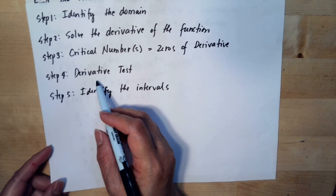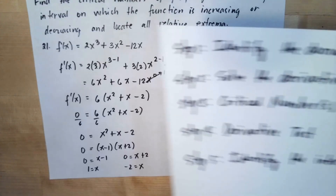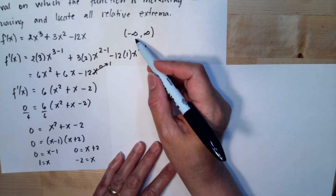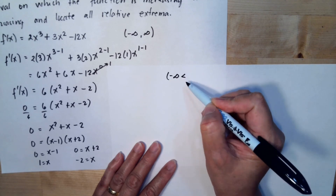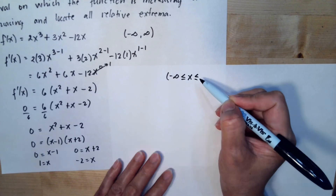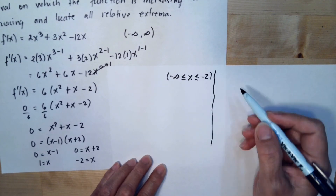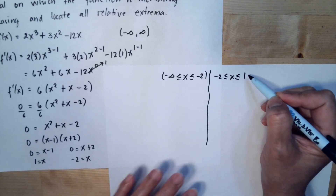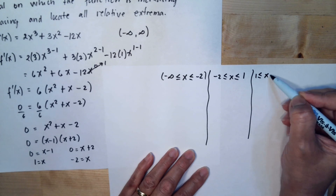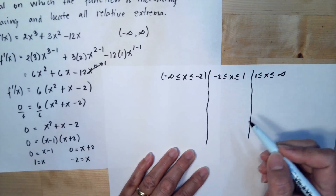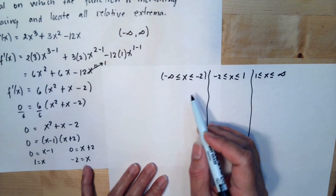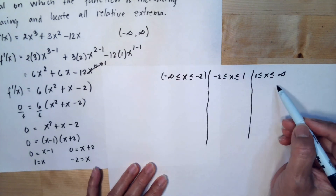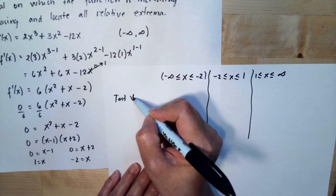Now we perform the first derivative test. We set up three intervals using the critical numbers: negative infinity to negative 2, negative 2 to 1, and 1 to positive infinity.